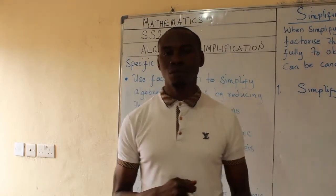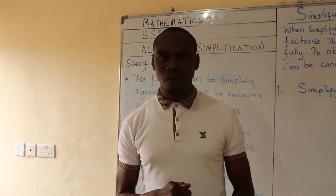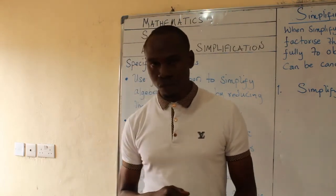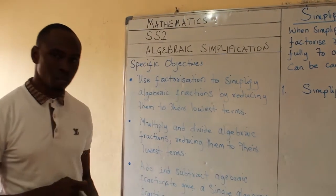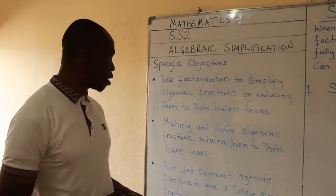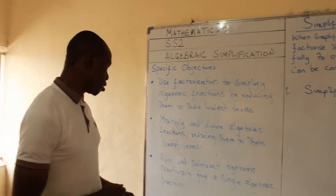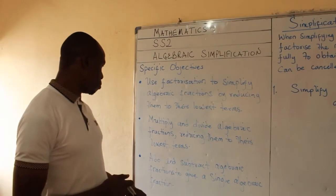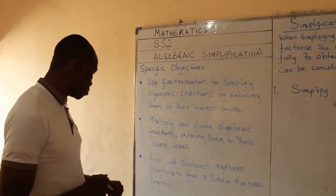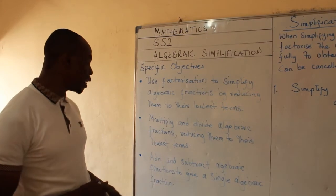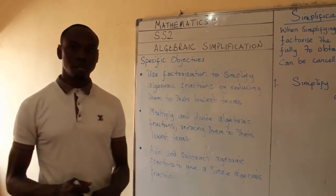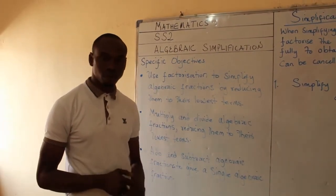Good day, students of Sleep Angels International School. Welcome to another session of our online classes. My name is Mr. Victor Oniki. The topic today is Algebraic Simplification. My aim is to make you know how to use factorization to simplify algebraic fractions by reducing them to their lowest term, how to multiply and divide algebraic fractions, and how to add and subtract algebraic fractions to give a single algebraic fraction. Those are the three lesson objectives we are going to be looking at today.